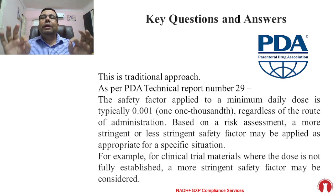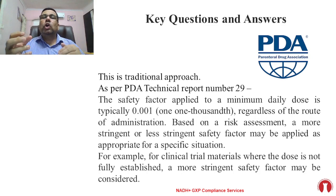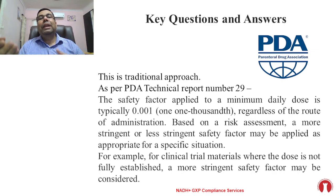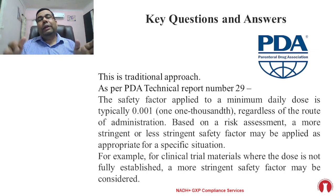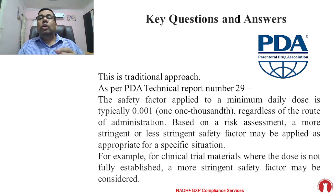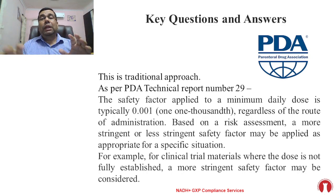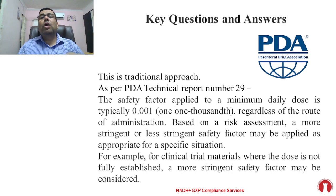As per PDA Technical Report Number 29, the safety factor applied to the minimum daily dose is typically 0.001 — that is, 1/1000 — regardless of the route of administration. Whether the product is topical, injectable, ophthalmic, or oral solid dose, whatever the route of administration, you need to follow the 0.001 factor for the calculation. However, based on a risk assessment, a more stringent or less stringent safety factor may be applied as appropriate for specific situations.